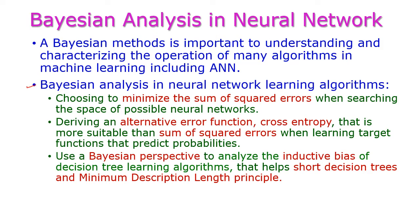Next let us see the importance of Bayesian analysis in artificial neural networks. The first one is choosing to minimize the sum of squared errors when searching the space of possible neural networks. The second one is deriving alternative error functions and cross entropy, which are more powerful than the sum of squared errors.